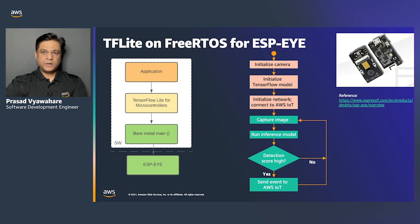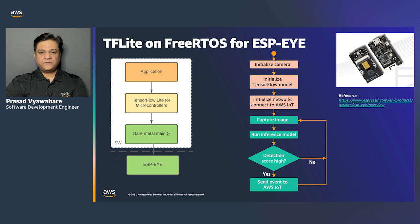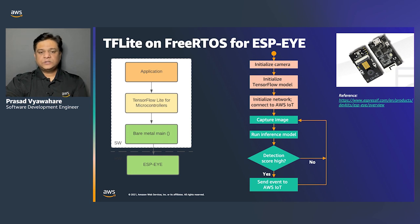Hello everyone, I'm Prasad, a software development engineer in the AWS IoT group. I'll talk in detail about the example implementation for a connected TinyML device. We selected the ESP-Eye development board, featuring the ESP32 chip, a 2-megapixel camera, a microphone, 4 megabytes of flash, and 8 megabytes of external RAM — sufficient to store and run the TF Lite model for microcontrollers. ESP32 also has two CPU cores, making it easy to run TF Lite models alongside application loads. Wi-Fi connectivity allows connecting to AWS IoT services to report events and take actions.